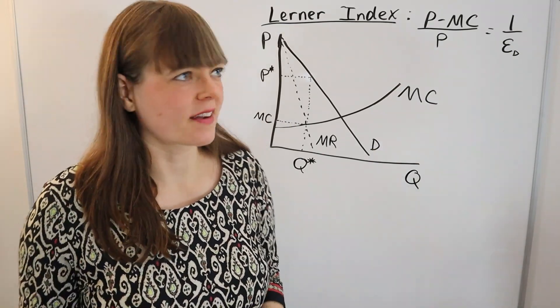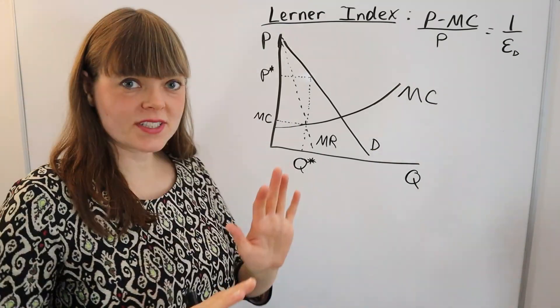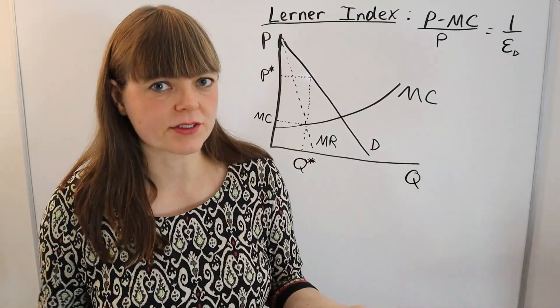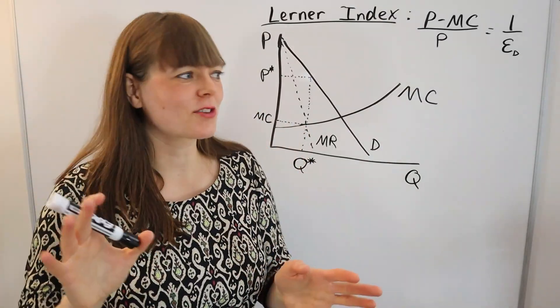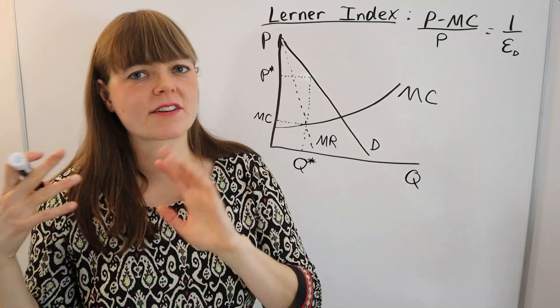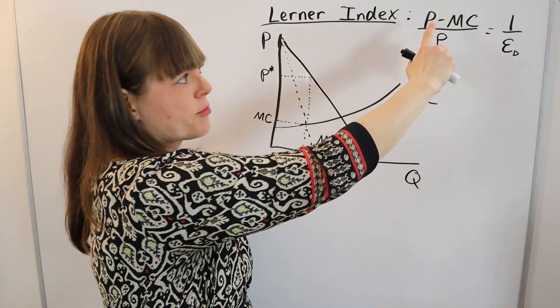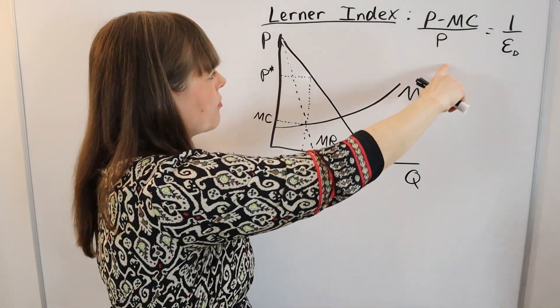What is the Lerner Index? This is a measure we look at when examining monopoly-style models. Monopoly includes some types of oligopoly models and monopolistic competition models. The Lerner Index is price minus marginal cost over price.